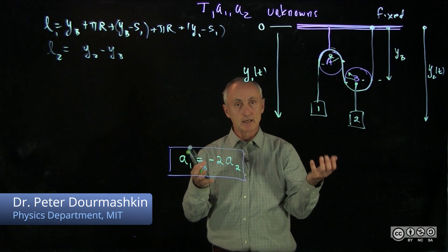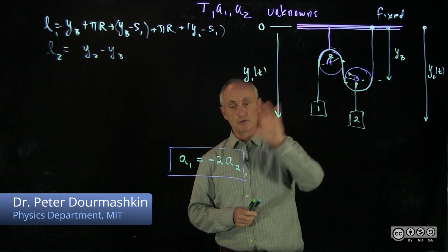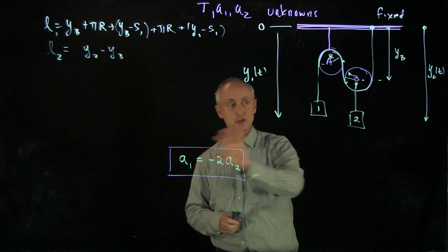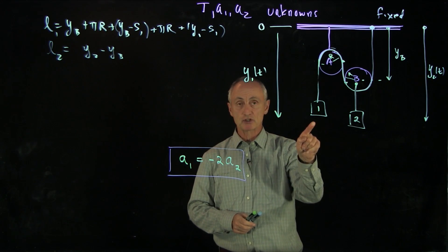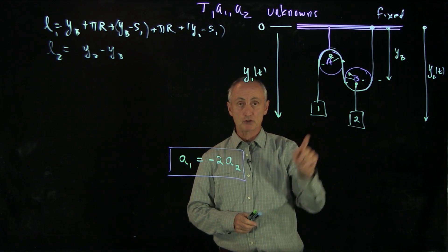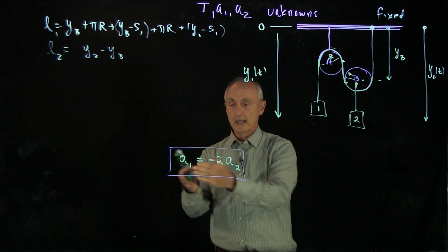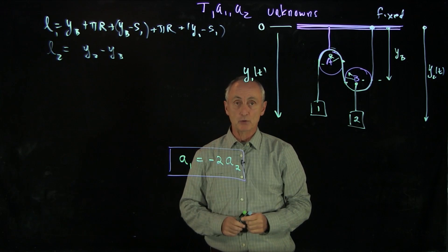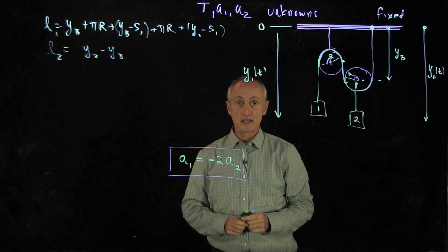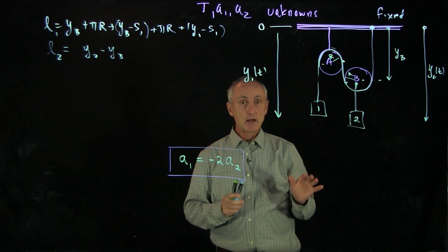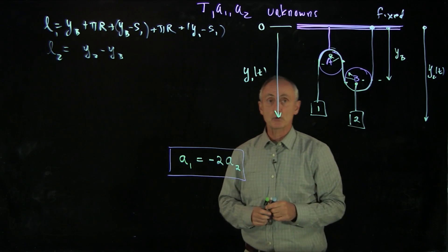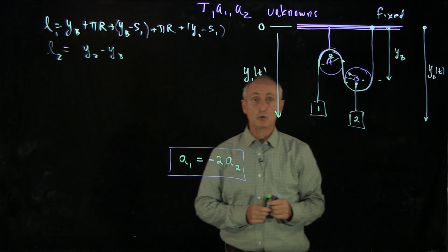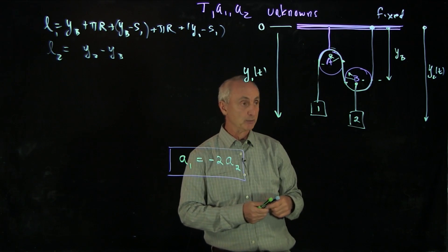When we did our analytic analysis of the constraint conditions between the accelerations of objects 1 and 2, we came up with a condition that a1 was equal to minus 2a2. Now let's do something which we call a virtual displacement argument.